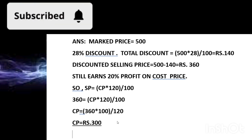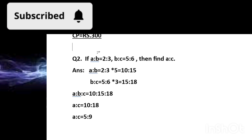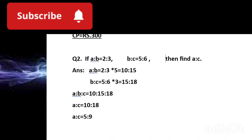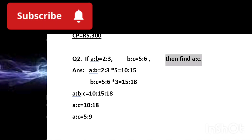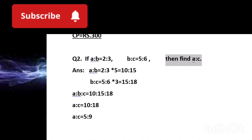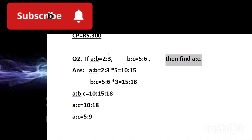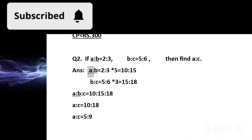The next question is about ratios. Two ratios are given: a:b = 2:3, and b:c = 5:6. The question asks us to find a:c. There is no direct relation between a and c, so we have to use b as the common link. Since b appears in both ratios, we'll use b to combine them and find a:b:c, then extract a:c.